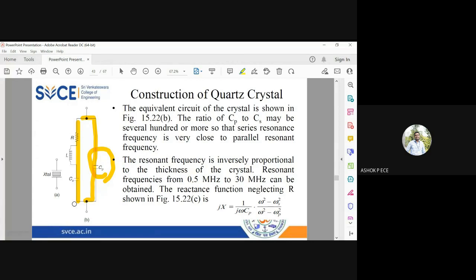Inside the crystal is vibrating, which is oscillating, so definitely you will have an RLC circuit inside. So that is represented here. When the capacitance is in series with inductor you call it as cs. When the capacitance is parallel to your inductor it is called as cp.